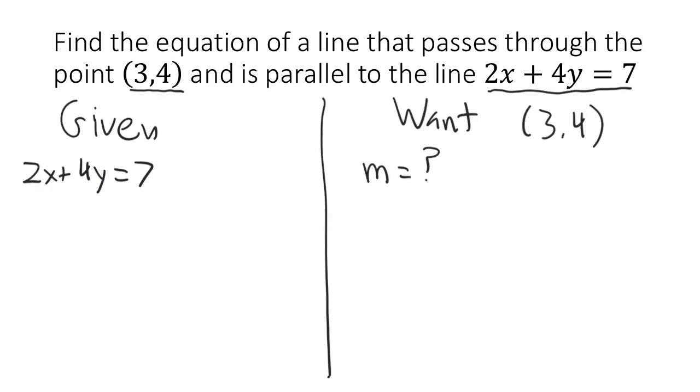Well, if we can determine the slope of the line that we are given, that will have to be the same as the slope of the line we want because the two lines are parallel. We can find the slope of our given line by doing a little bit of algebra to put it into the slope-intercept form.